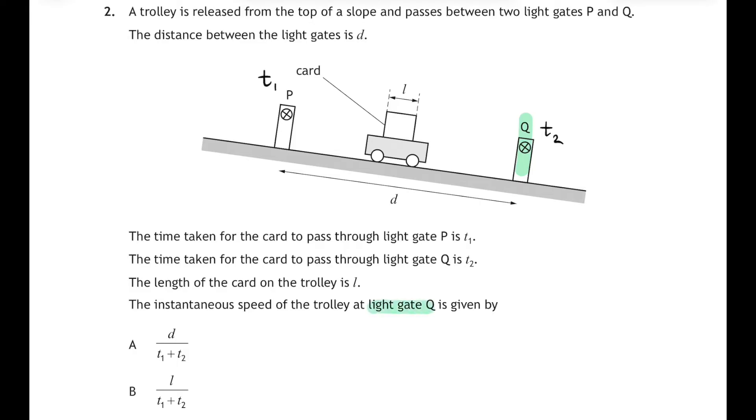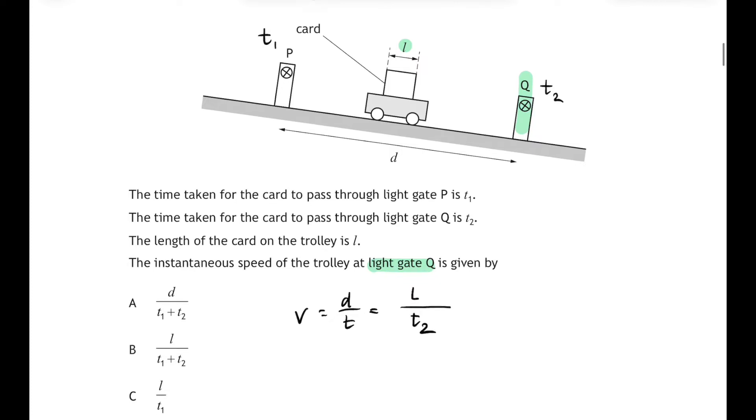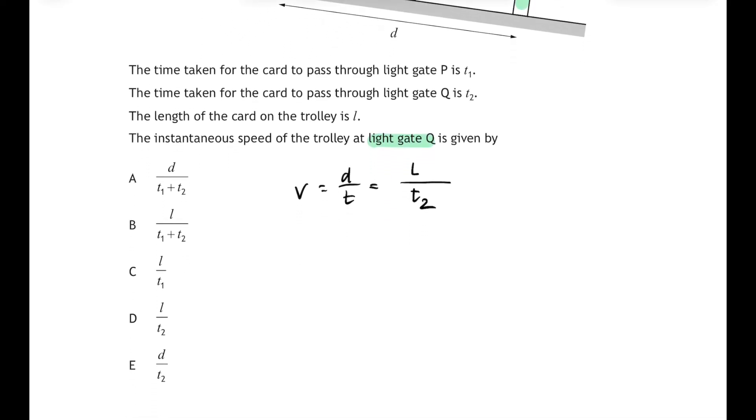The speed of the trolley at that point will be the distance that goes through the gate divided by the time it takes to go through the gate. And the distance that goes through the gate is the length of the card l divided by t2. Let's have a look at the answers then: l over t2 is answer D.